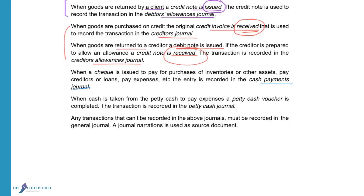When cash is taken from petty cash to pay expenses, a petty cash voucher is completed. This transaction will be recorded in the petty cash journal. Any transactions that can't be recorded in any of the above journals must be recorded in the general journal, and the journal narration will be used as a source document. With every entry in the general journal, a small sentence — called a journal narration — is written to explain why the specific entry was recorded.